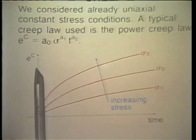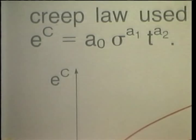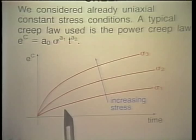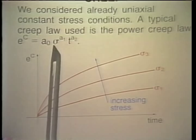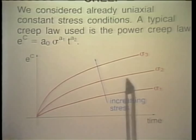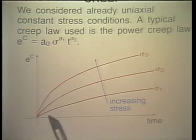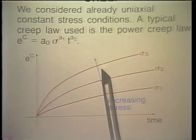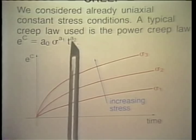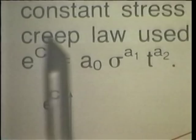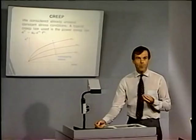Here we plot creep strains as a function of time, and curves that we would typically obtain using this creep law for constant stress values with time are shown here. Notice that as the stress value increases, which however is constant in time, we obtain a larger creep value — the creep strains increase. This is clearly shown by this law. Notice a0, a1, and a2 are constants determined from laboratory test results.